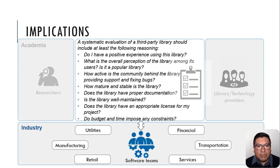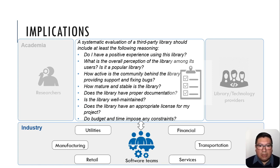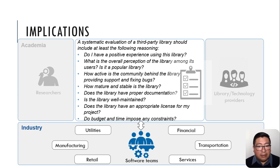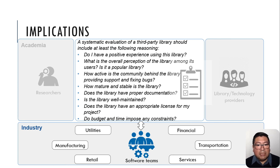Our study also provides suggestions for software practitioners. Having a checklist is important for taking these criteria into account, especially to make decisions more systematic by ensuring at least some industry best practices are followed. This means considering not only popularity — one of the most common aspects in decision-making — but also other aspects: how active and responsive is the community, how mature and stable is the library, how good is the documentation, is it well maintained, does it have an appropriate license, and are there budget and time constraints in the project. These factors should be taken into account all the time.